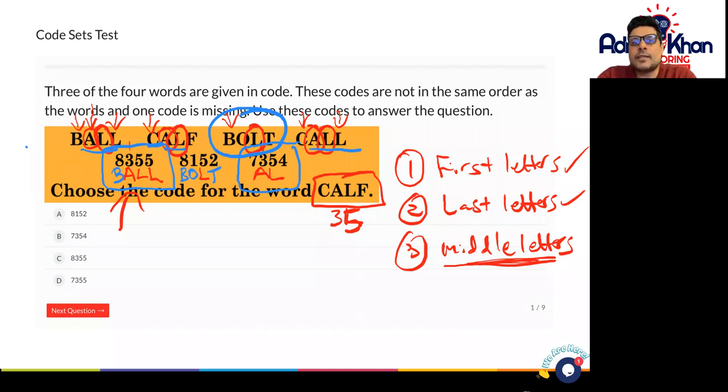So that means that al that's now left over in the middle must be either call or it must be calf. Now it can't be call because four is a different number. So four must be f and seven must be calf. Seven must be c to make calf.